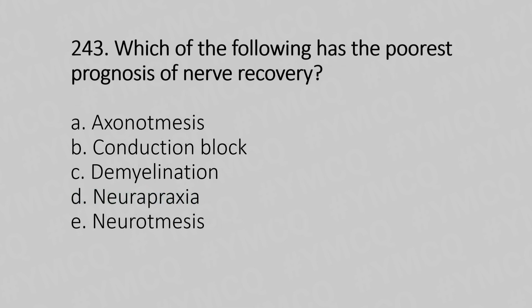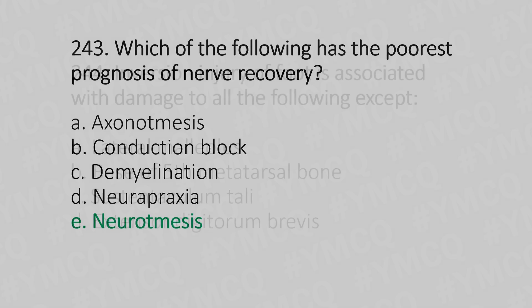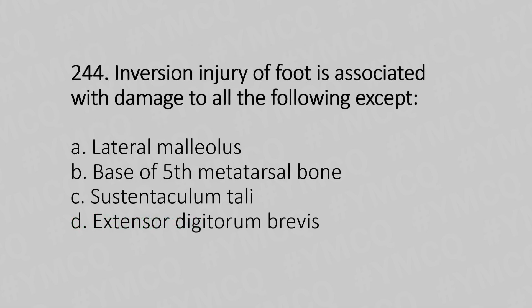Question 243: Which of the following has the poor prognosis for nerve recovery? Option A: axonotmesis. Option B: conduction block. Option C: demyelination. Option D: neuropraxia. Option E: neurotmesis. The answer is Option E, neurotmesis.